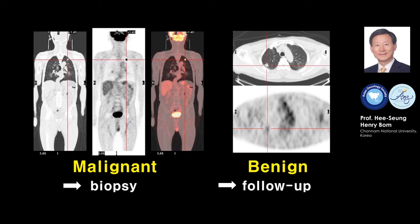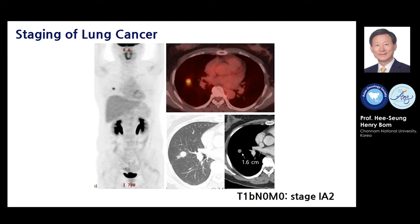The next application is staging of cancer. This patient has a small cancer in the right lung. Luckily, there is no regional or distant metastasis. The stage is T1B, N0, M0 — Stage 1A2 according to the recent AJCC cancer staging, 8th edition.